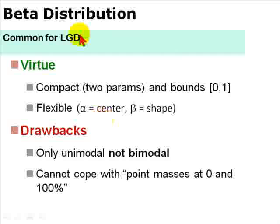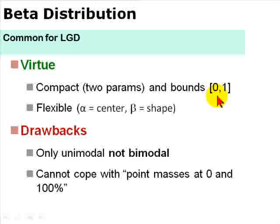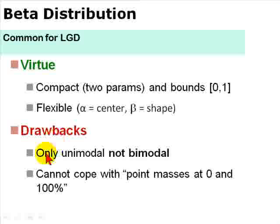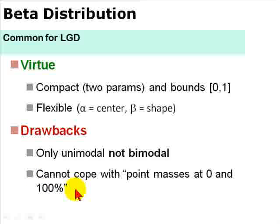In conclusion, for FRM candidates, the beta distribution is common in credit risk portfolio models owing to its virtues: it is compact, only requires two parameters, can be bounded at 0 and 100% describing what can happen in a recovery, and is flexible by tweaking the alpha (center) and beta (shape) parameters. It does have two drawbacks noted by Dacer Vigny: it can only give a unimodal — single-humped — distribution instead of a bimodal distribution oftentimes observed in actual recoveries. And if the distribution has point masses at both 0 (no recovery) and 100% (ultimate recovery), that would be a bimodal distribution that the beta cannot handle well.